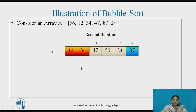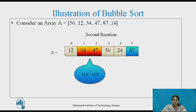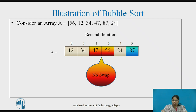In the second iteration, the comparison begins from the very beginning. The first two elements are compared and A[0] is lesser than A[1], so no swap is done and they remain as they are. The next comparison is done and A[1] is less than A[2], so no swapping is done. The next comparison is done between 47 and 56, and A[2] is less than A[3], so no swapping is done and they remain as they are.